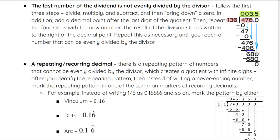Since we had 68 remaining, we put point zero so we could continue past the decimal point. We bring down that zero and now we have 680. Does 136 divide into 680? It does — five times. Five times 136 is 680. Subtracting gives us zero, and we've filled all of our spots in the quotient line. So 3.5 is our final answer.